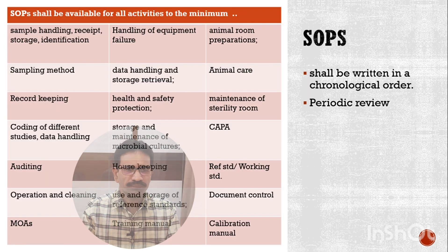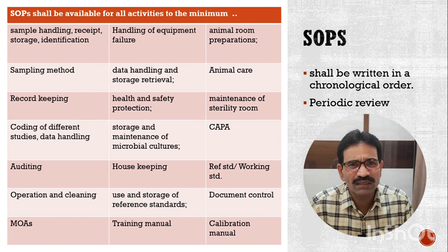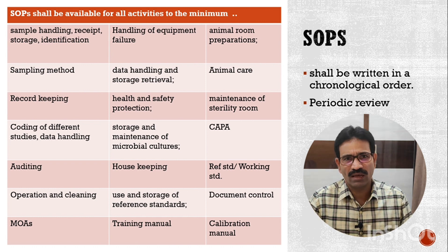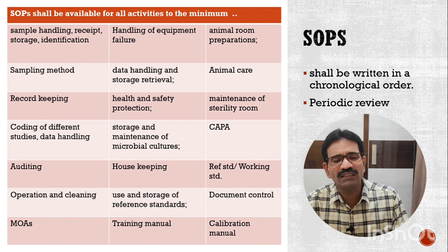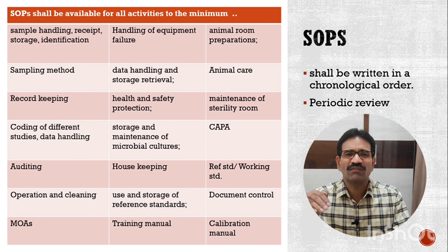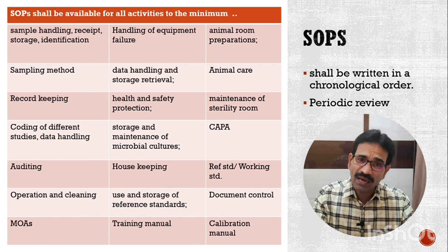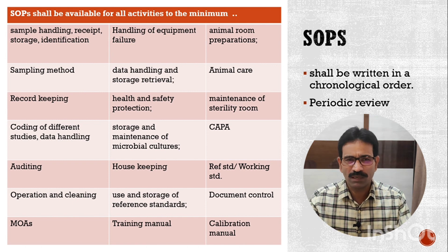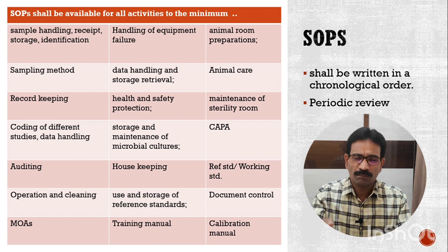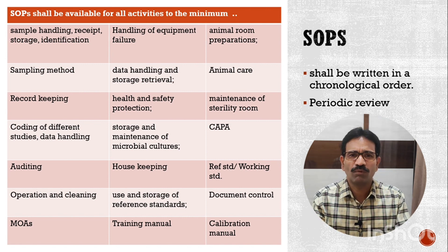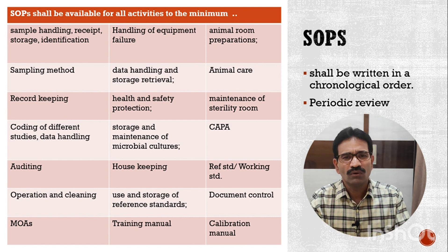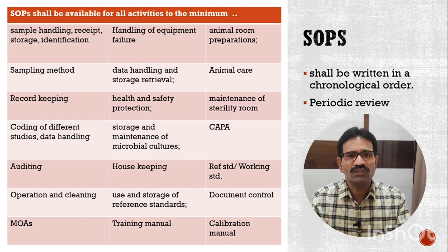Another area is SOPs. Schedule L1 clearly states that you have to have SOPs for all activities conducted in your laboratory. SOPs shall be written in a chronological order — that means in sequential order. For example, if you are making tea, you first collect all the required materials, then arrange the gas, then place the vessel, add water, add tea leaves and sugar, boil, then add milk. Similarly, all lab activities must follow this chronological order in their respective SOPs.